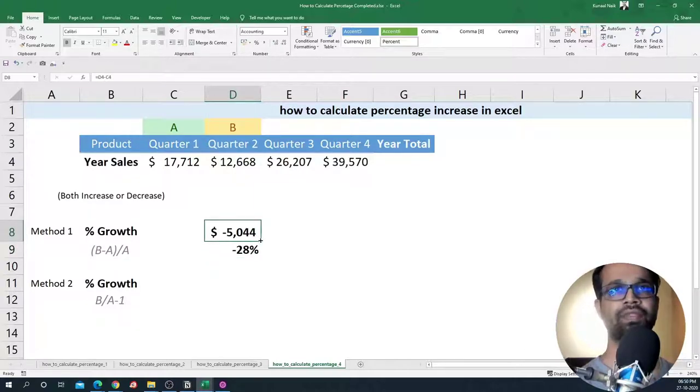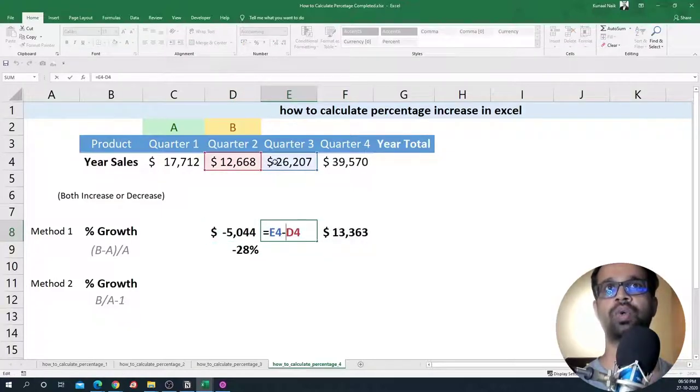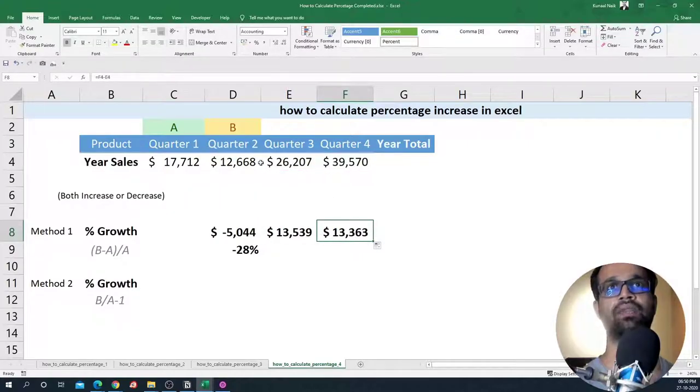Now if I copy these cells towards the right hand side, you will see that it will show whether it has increased or decreased. Unfortunately, since from quarter three onwards, there's always been an increase and that's why you're seeing positive numbers.